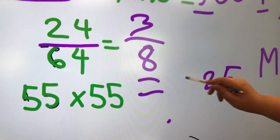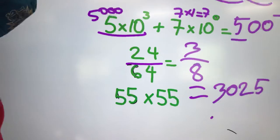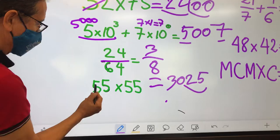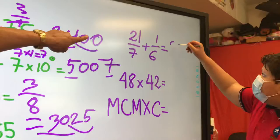What about 55 to the power of 2? 3,025. That is correct. Why? Because we can do 5 times 5 is 25, and 5 times 1 more of this, which is 6. 5 times 6 is 30. Good job.